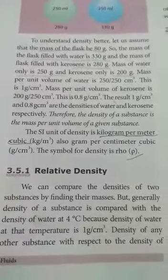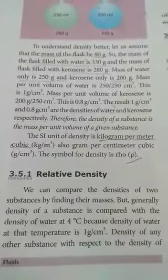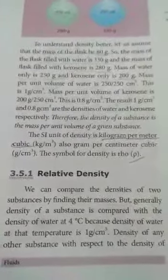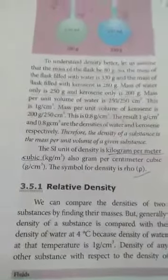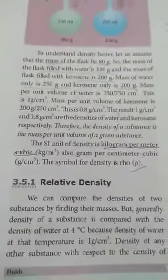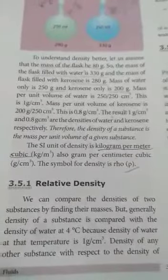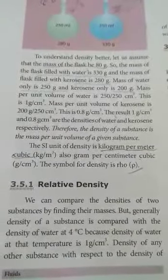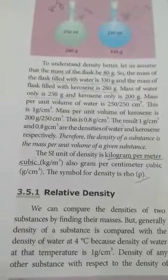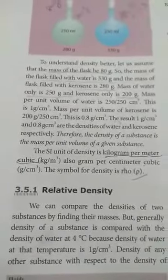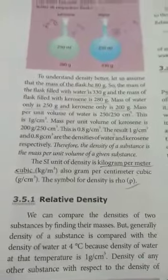Mass is very important. The mass per volume is the formula for density. Generally, the density of a substance is compared with the density of water. Water at 4 degrees C has a density of 1 gram per centimeter cube.